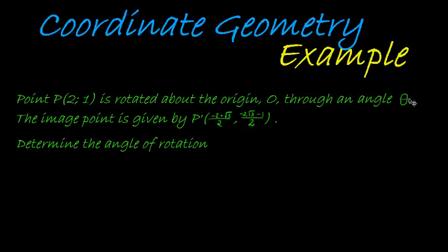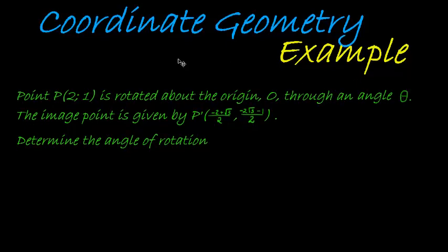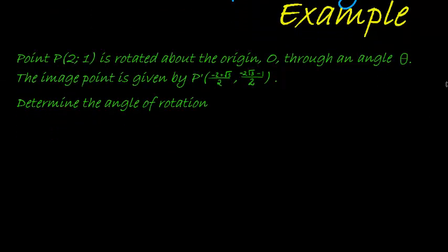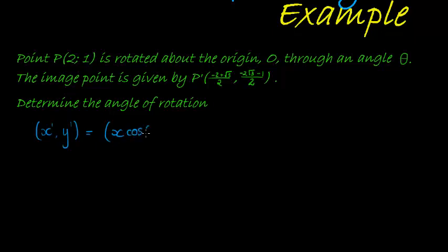We need to find theta again. In order to solve an unknown, we need to find one equation where that unknown appears. The equation we use when doing rotations is the transformation rule. The image point (x-accent, y-accent) is equal to x multiplied by cos of theta minus y times sine of theta — this gives the x-accent coordinate.